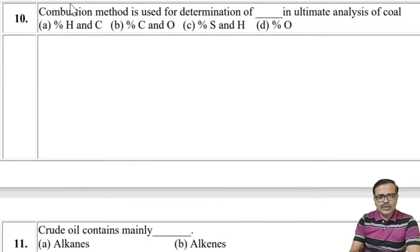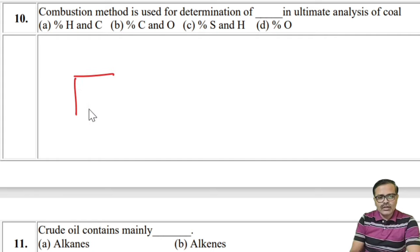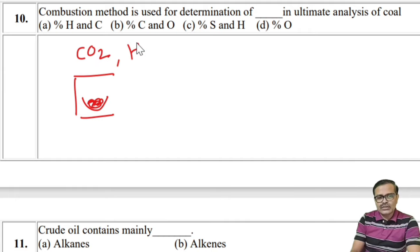The combustion method is used for determination of carbon and hydrogen in ultimate analysis of coal. We burn the coal sample — carbon is converted into CO2 and hydrogen is converted into H2O — and these vapors are passed through U-shaped tubes.